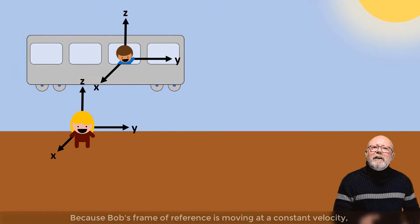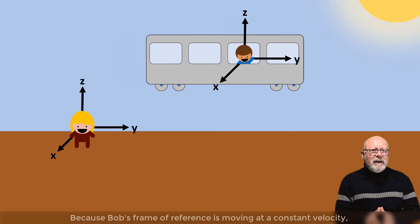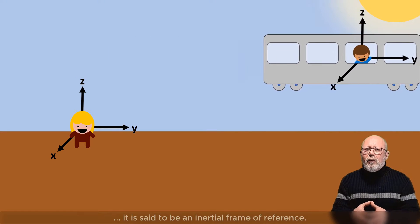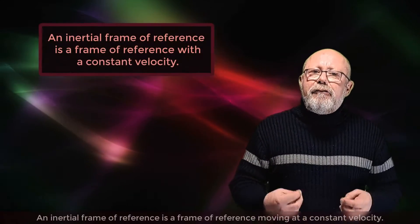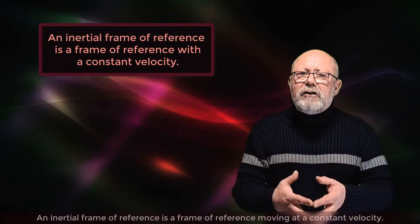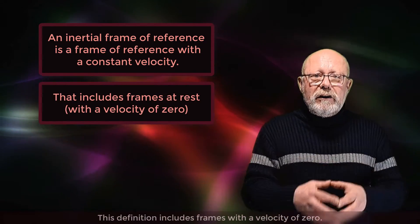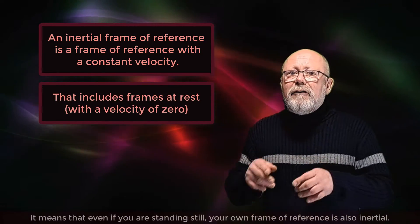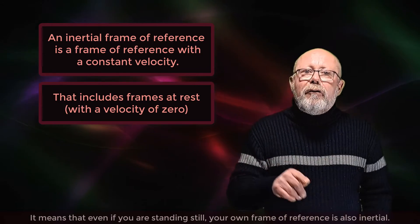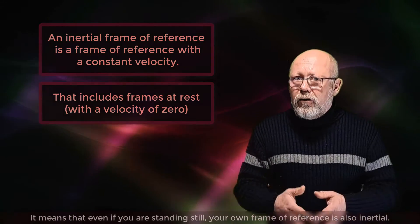Because Bob's frame of reference is moving at a constant velocity, it is said to be an inertial frame of reference. An inertial frame of reference is a frame of reference moving at a constant velocity. And this definition includes also frames with a velocity of zero. It means that even if you are standing still, your own frame of reference is also inertial.